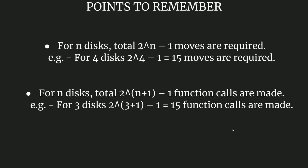Now, lastly, there are some points that we should remember when tackling the Tower of Hanoi problem. If we have n number of disks, then total 2 to the power n minus 1 moves are required. For example, for 4 disks, 2^4 minus 1 equals 15 moves are required. As we did with 3, the required number of moves is 2 to the power 3 minus 1, that is 7, and we had exactly 7 lines of outputs.